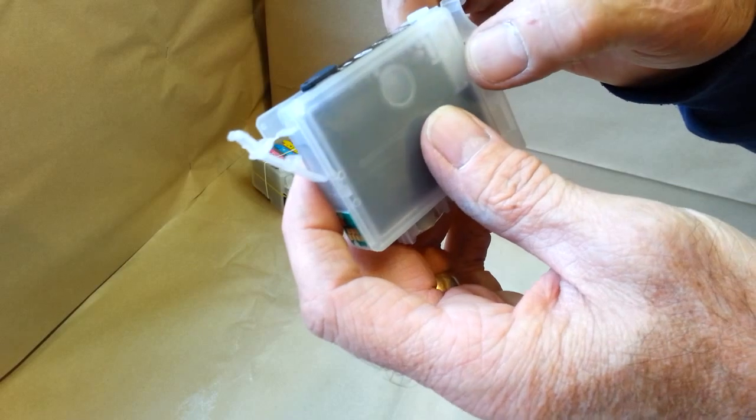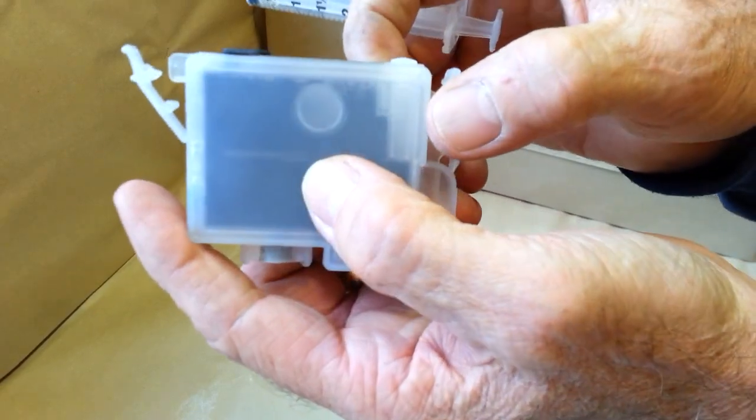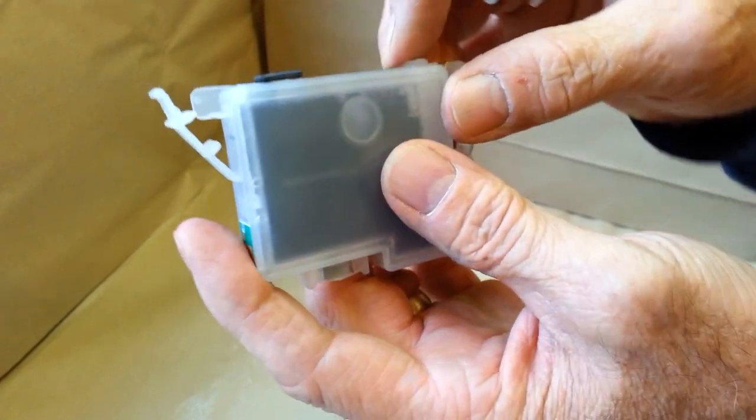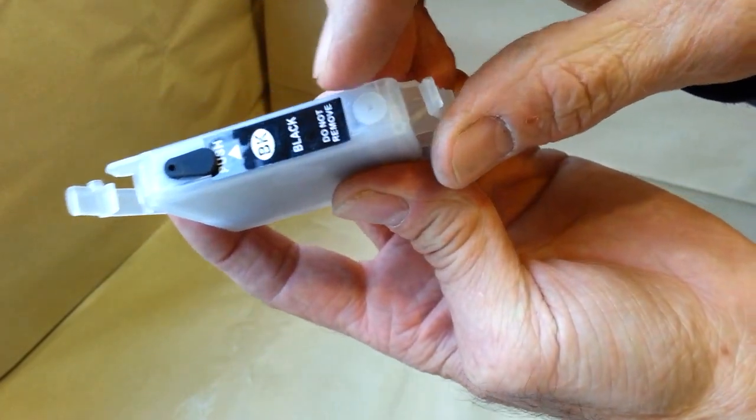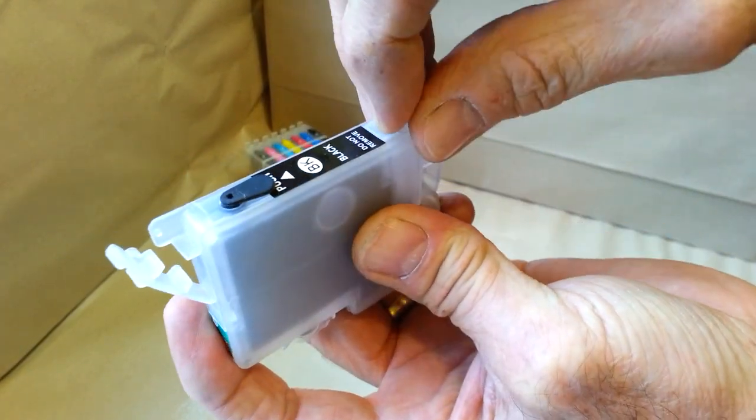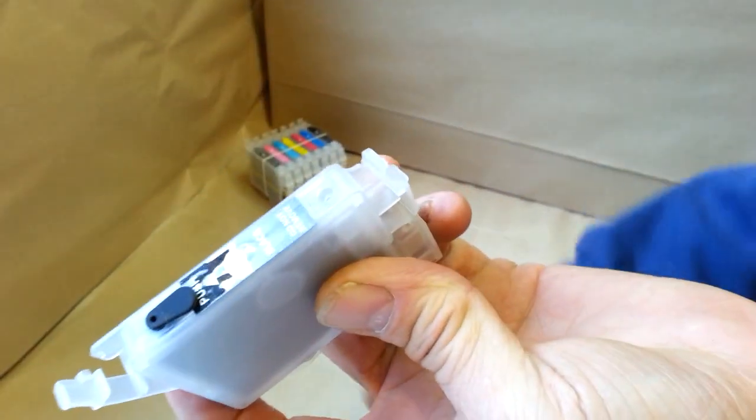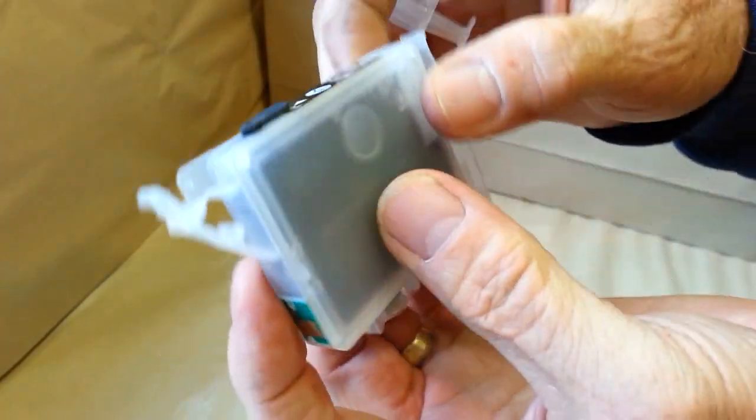The vent plug is generally going to be the area where you see somewhat of a clear spot right here or an empty spot where there's no ink. You're going to take the rubber plug that is in the cartridge and take that out because the cartridge needs to be vented to the outside air. There we go, cartridge is vented now.